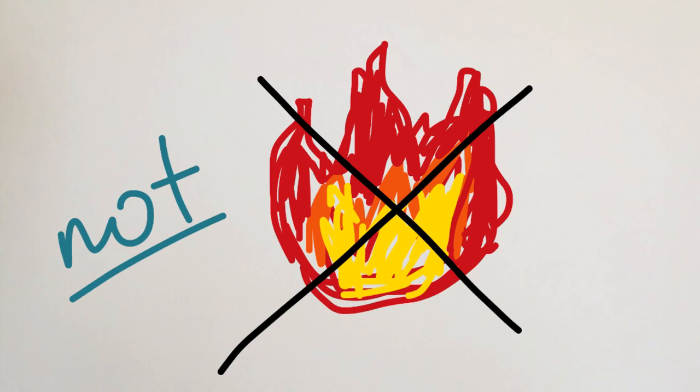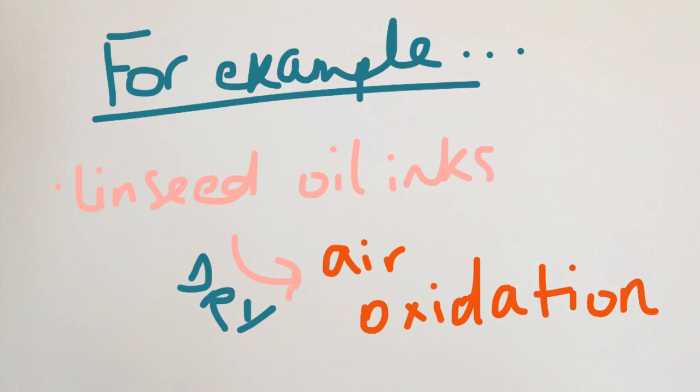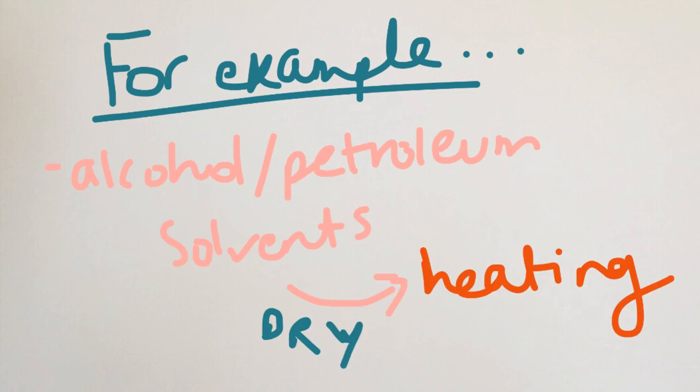And sometimes, as it is with newspaper, the ink is not heated and rather is absorbed by the fibers of the paper. Linseed oil inks dry by air oxidation, which is what is sometimes used for newspapers, and inks with alcohol or petroleum-based solvents dry by evaporation through heating.